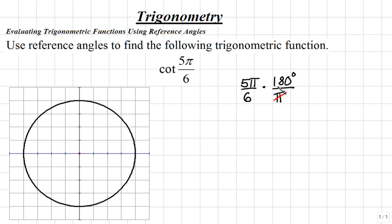In doing so, we see that the π's will cancel, and that 6 cancels into 180 30 times. So we're left with 5 times 30 degrees. This simplifies to 150 degrees. So cotangent of 5π over 6, we'll find the same answer as cotangent of 150 degrees.